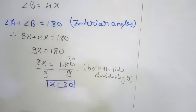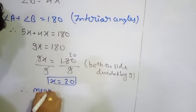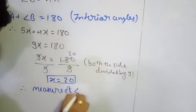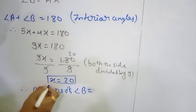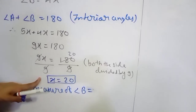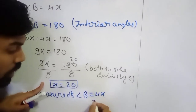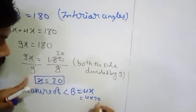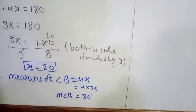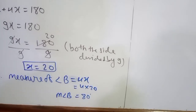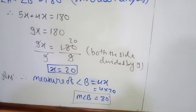Now after that, they are asking to find the measure of angle B. We have found the value of x, the common multiple. So the measure of angle B is equal to 4x, which is 4 into 20, giving us 80 degrees. Therefore, the measure of angle B is 80 degrees.